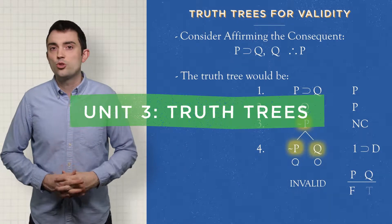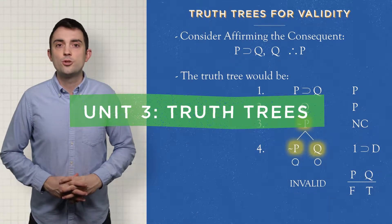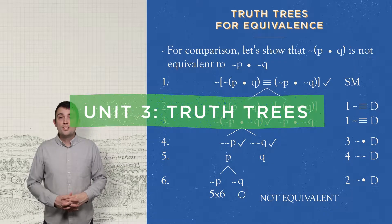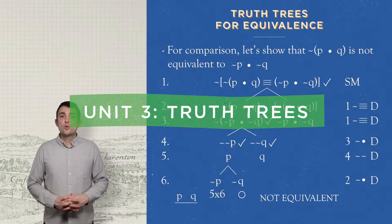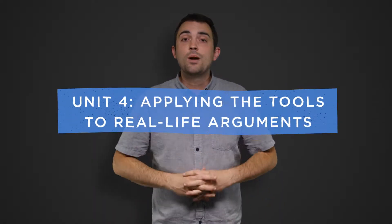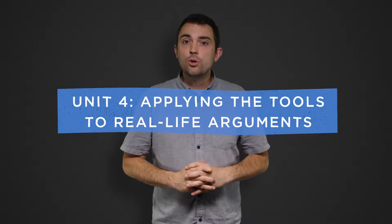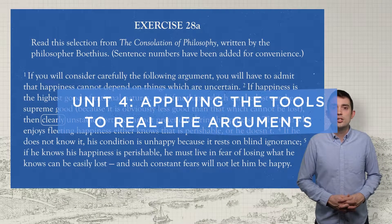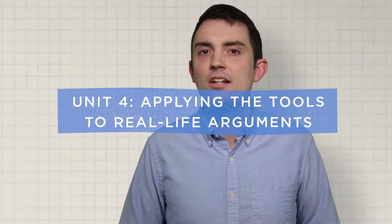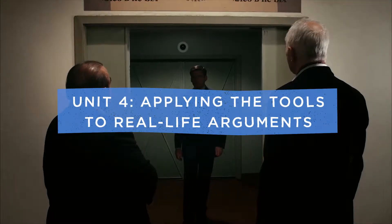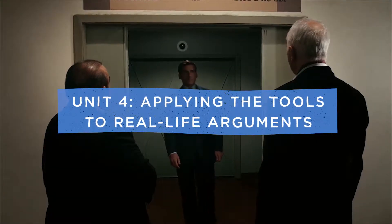Unit 3 covers truth trees, another method for visualizing how large arguments are made out of tiny basic propositional parts. And then Unit 4 is probably the most important unit in this text — it's where you get to practice applying everything you've learned in the first three units to real-life arguments. It's where the rubber meets the road.